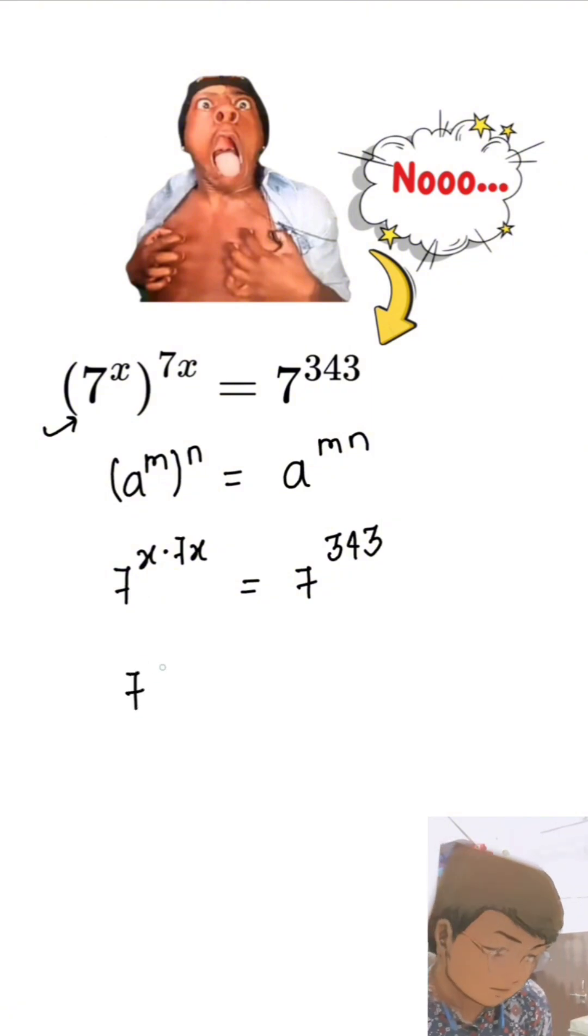So I can write 7 to the power 7x square equal to 7 to the power 7 cube.